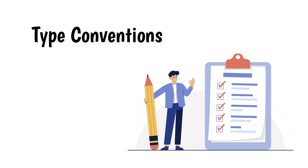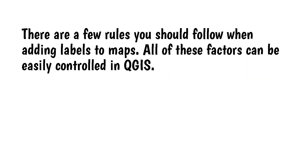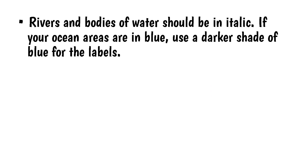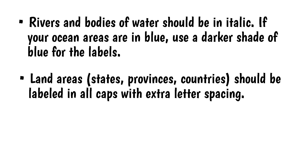Type Conventions. There are a few rules you should follow when adding labels to maps, and all of these factors can be easily controlled in QGIS. Rivers and bodies of water should be in italic. If your ocean areas are in blue, use a darker shade of blue for the labels. Land areas such as states, provinces, or countries should be labeled in all caps with extra letter spacing.